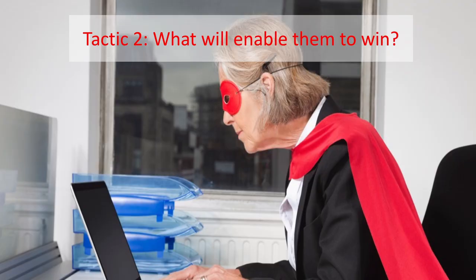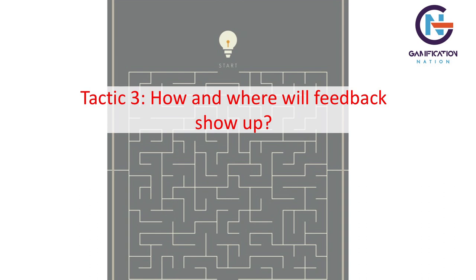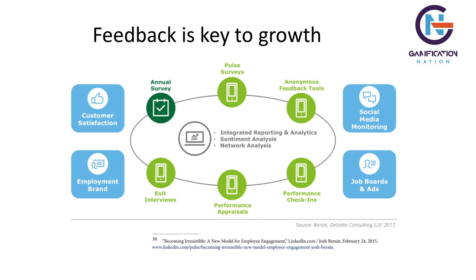The second tactic: what will enable them to win? We have win conditions. We want to give feedback and decide where in the process that feedback shows up — is it a login streak, a message, a nudge? Feedback is the key to growth. The reason games are so popular is we get instant feedback on rights and wrongs. At work we usually wait six months for a performance review — but if we could have it in the moment, we can change in real time.